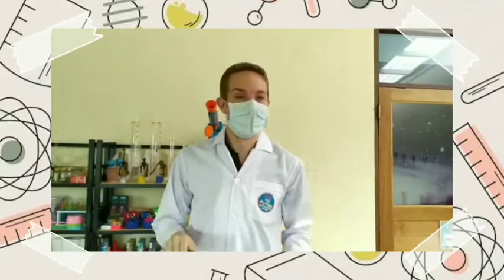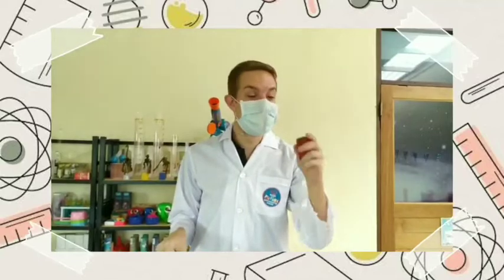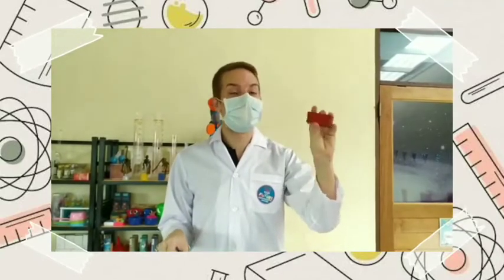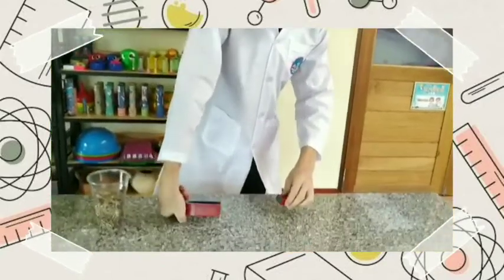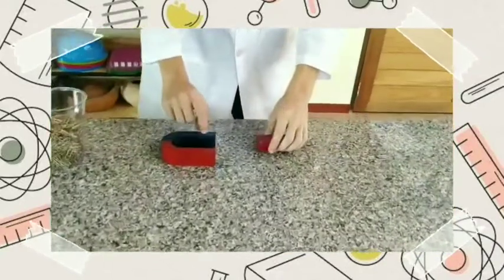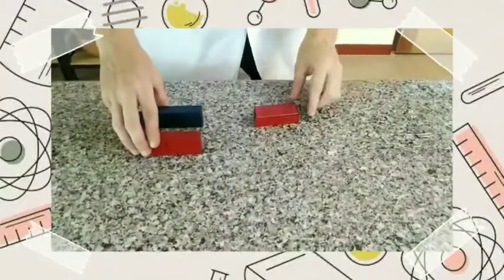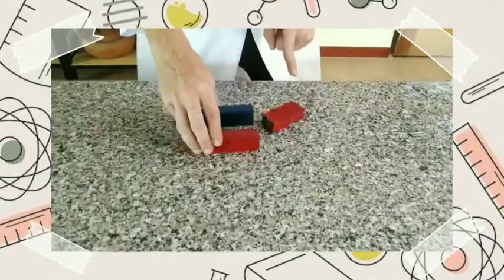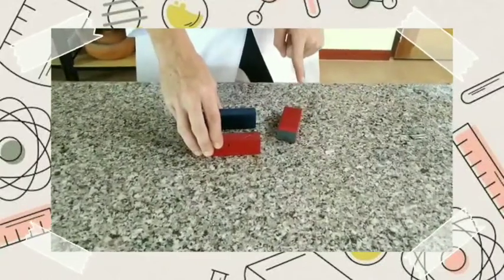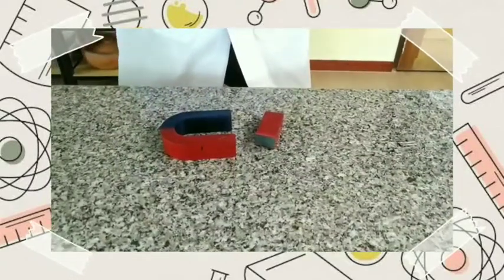These are opposites. Let's see what happens when we take this magnet. This magnet has a North and a South too. If I put South with South, what's going to happen? Let's see. Oh! We can see it moving! It's moving away! So when they're the same, they go away.